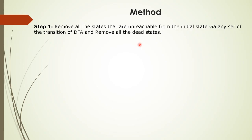That means we remove unreachable states and dead states. An unreachable state is one that cannot be reached from the starting state. If a state is unreachable, it and any dead states associated will be removed. That is the second step — draw the transition table for the remaining states.